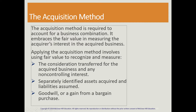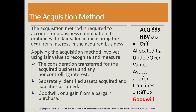In later chapters, we'll also look at the fair value of non-controlling interest. We need to identify assets and liabilities that are over or undervalued, which will result in goodwill or a gain from a bargain purchase. We came up with a formula for this, which we'll reiterate as we go through the presentations.